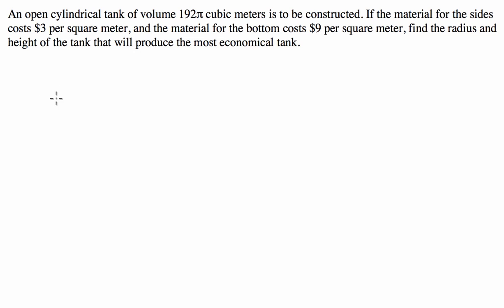G'day guys, the student has asked me to go through this calculus question with them, so I thought I'd make a video for everybody. So we've got a cylindrical tank that has a volume of 192 pi meters cubed. We've got to make this. The material for the sides costs $3 per square meter, and the bottom costs $9 per square meter. Find the dimensions that will produce the most economical tank.